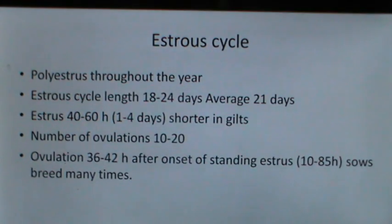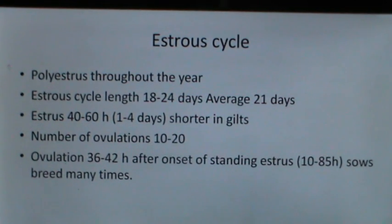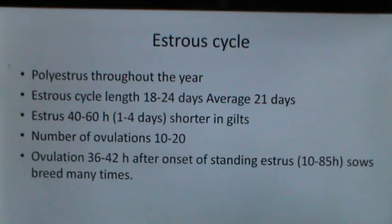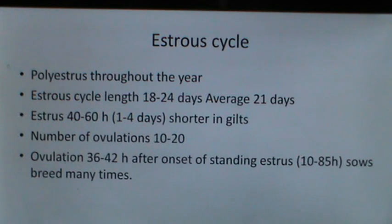Sows are polyestrous throughout the year. The estrus cycle length varies from 18 to 24 days, with an average of 21 days. The estrus period is 40 to 60 hours or 1 to 4 days, slightly shorter in gilts. The number of ovulations varies from 10 to 20, and ovulation occurs 36 to 48 hours after onset of standing estrus, though it may vary from 10 to 85 hours. Sows breed many times during an estrus cycle.